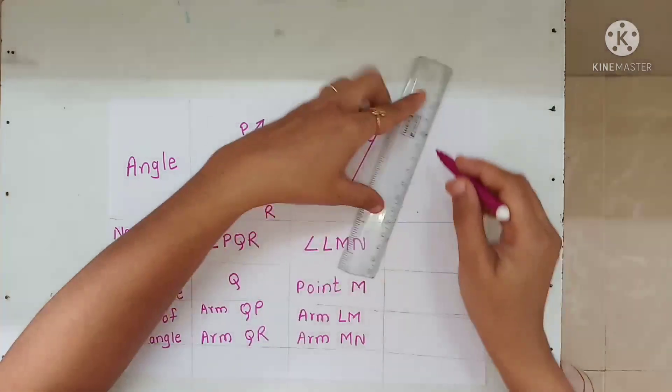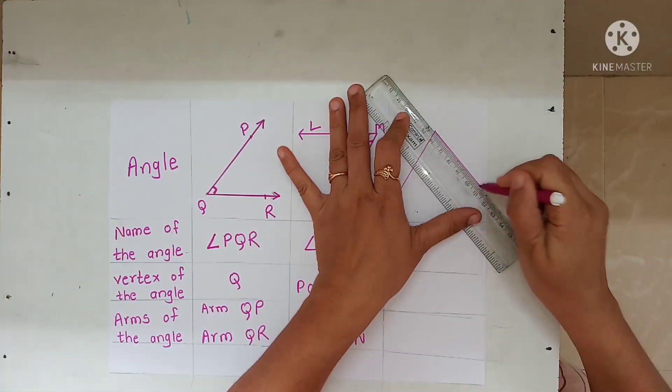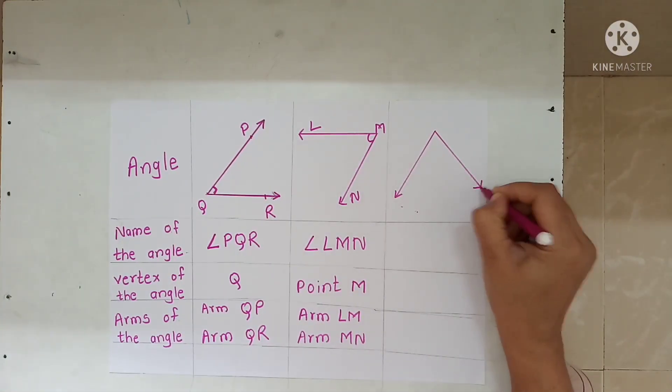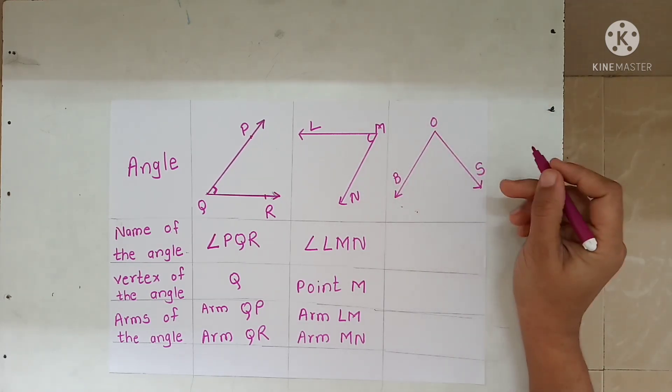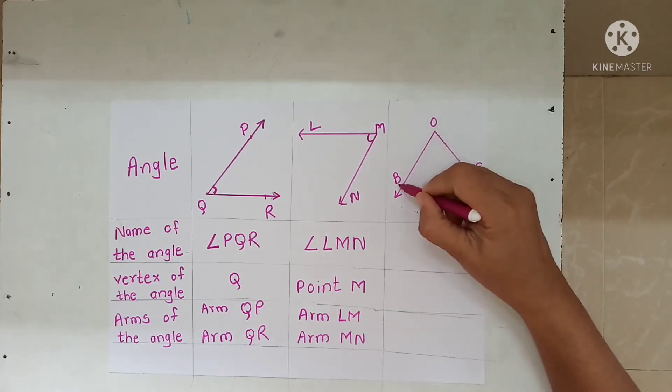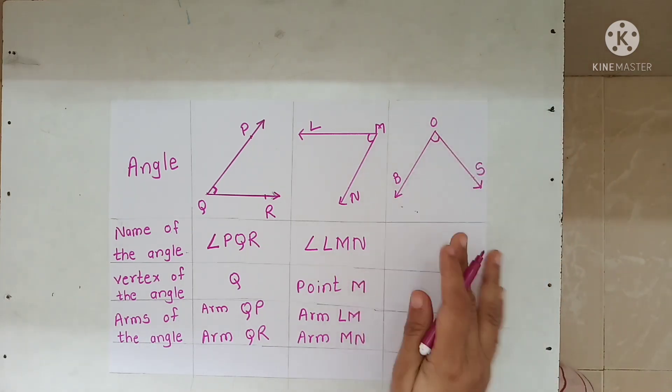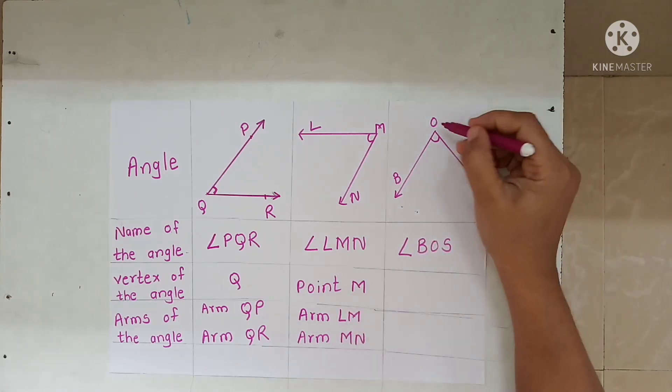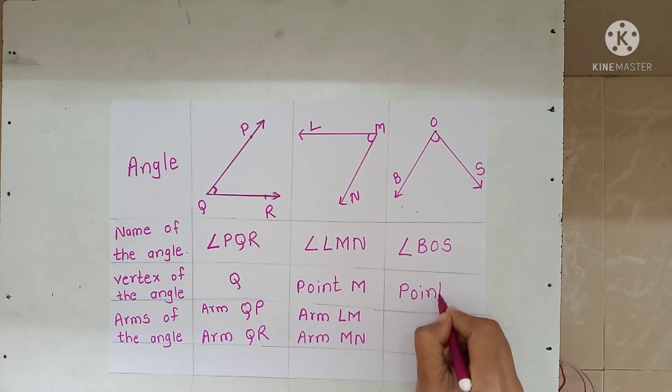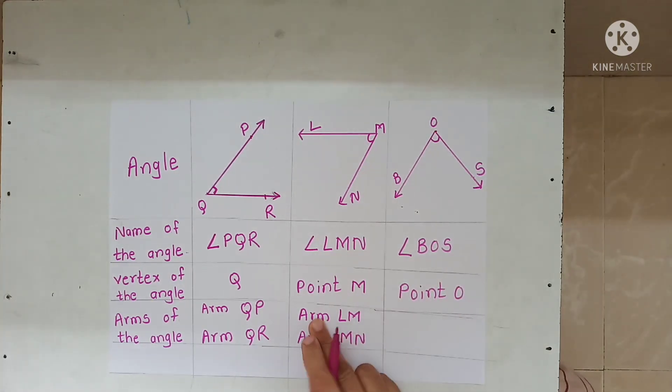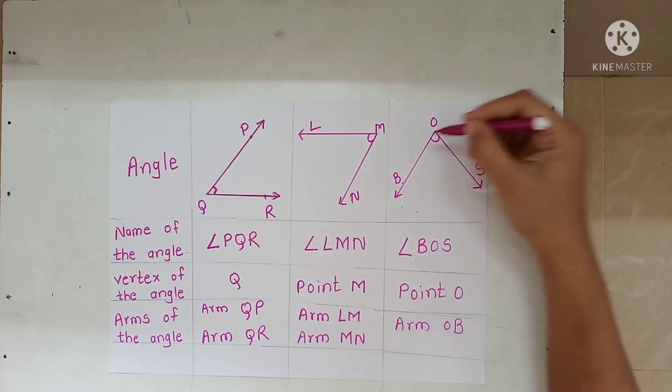Third angle: angle BOS. In this angle, side OB and side OS form angle at point O. So angle is denoted by this sign, angle BOS. Angle is formed at point O, so point O is the vertex. Then the arms: arm OB and arm OS.